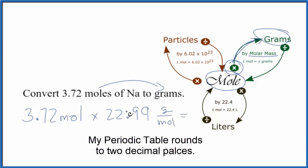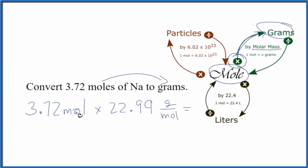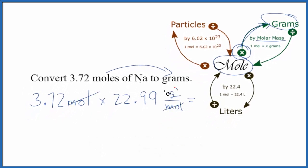So when we multiply these together, we have moles on top and on the bottom. They're going to cancel out. That'll leave us with grams. That's how we know we have the right answer because we're looking for grams.